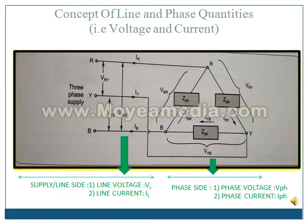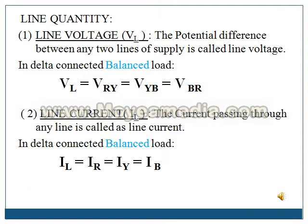On the line side, you will have line voltage and line current. Voltage is always measured across, so we connect a voltmeter between R and Y, naming it VRY. Second voltmeter between Y and B, named VYB. Third, between B and R, named VBR. So for balanced load, VL is equal to VRY, equal to VYB, equal to VBR.